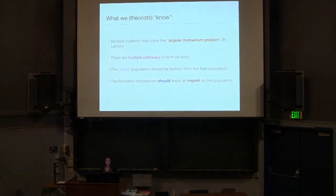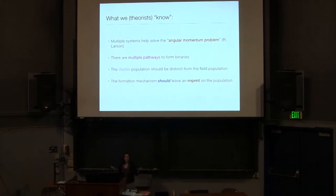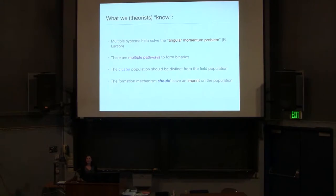I'm going to move on to give you a brief overview of what we think we know about binary formation. If they're very fundamental to all of astrophysics, we should probably know where they come from. Here's what I think we as theorists know — and I've placed 'know' in quotation marks — because the field of binary formation is still in some ways very young, despite the fact that we've been studying it for quite some time.